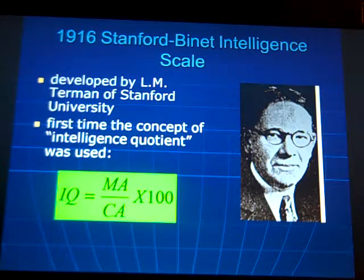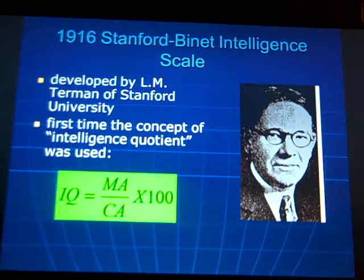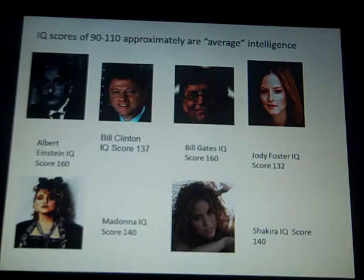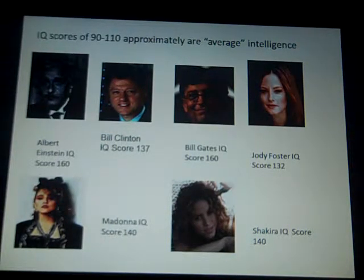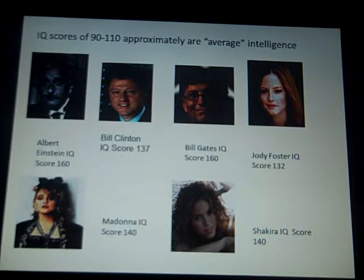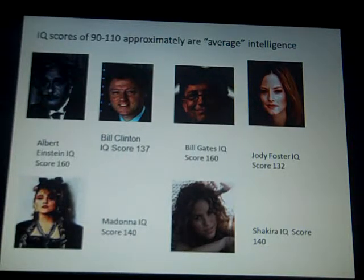The first time the concept of the intelligence quotient was used: IQ equals mental age divided by chronological age, times 100. A score of 100 is perfectly average IQ. When you get into 120 and above, you're looking at very high to superior ranges of intellectual functioning. Albert Einstein's IQ was 160 — very, very high. Former President Bill Clinton's IQ score was 137, which is very high.